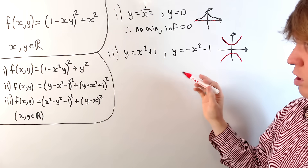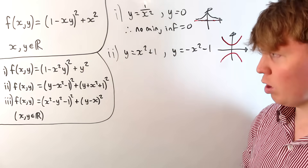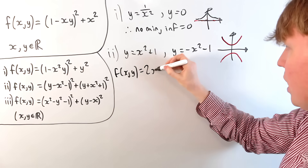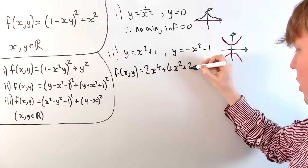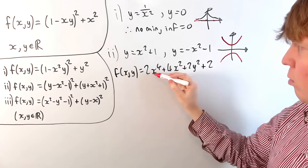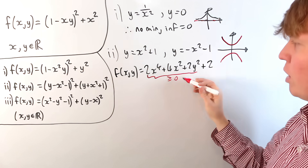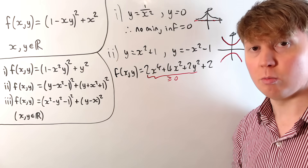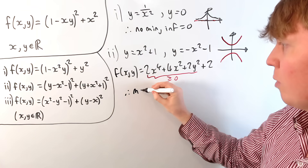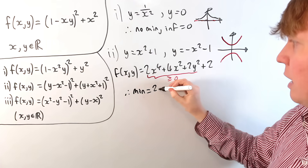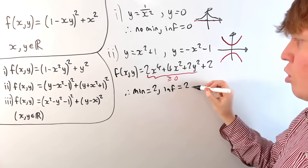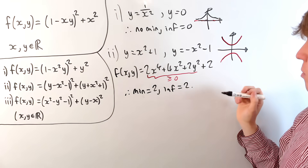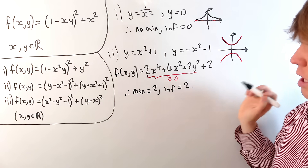So if we drew both of these on a graph, y = x² + 1 would be one curve, and y = -x² - 1 would be another. These two don't overlap, and also they don't get anywhere near each other — there isn't this asymptotic structure in our zero set. So there's no value of x that would make both terms 0 simultaneously. However, if we expand all the brackets and simplify, we get 2x⁴ + 4x² + 2y² + 2. All of this is greater than or equal to 0, and choosing x = y = 0 makes the function equal to 2 — we can't make it any smaller. So this function has a minimum equal to 2, and the infimum also equals 2.